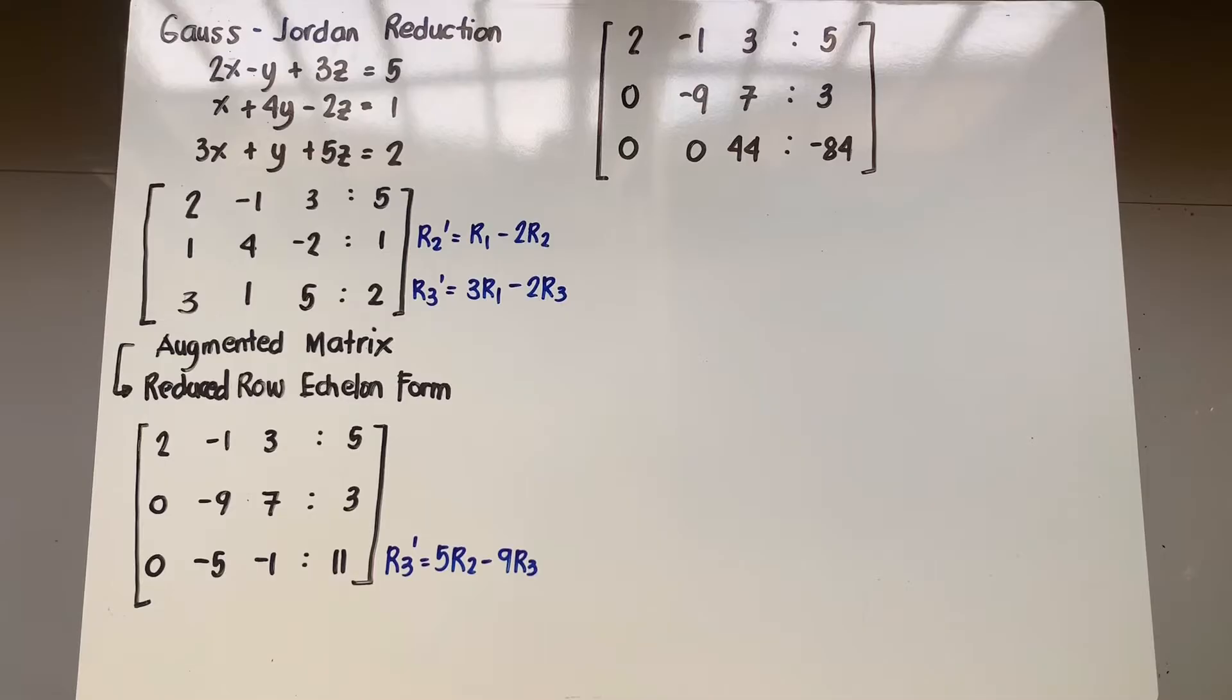This is our fourth method in solving for systems of linear equations and this method is known as the Gauss-Jordan reduction.